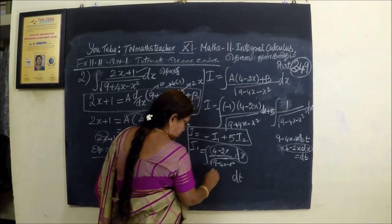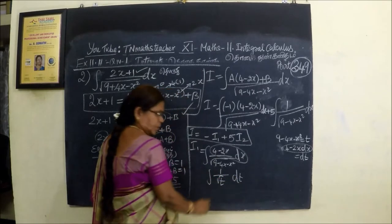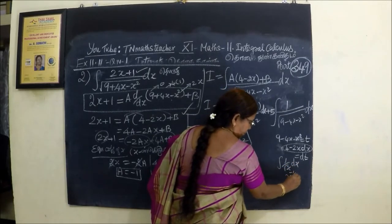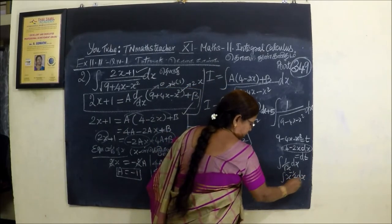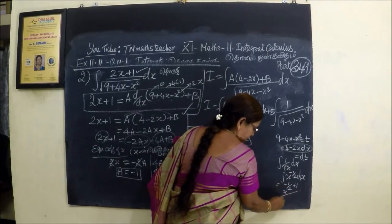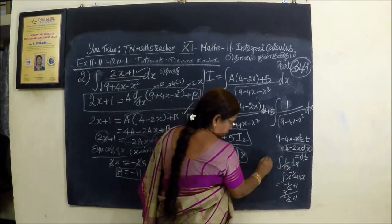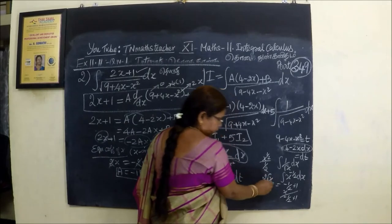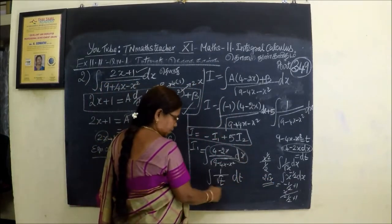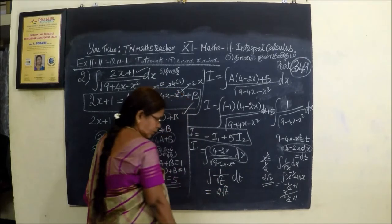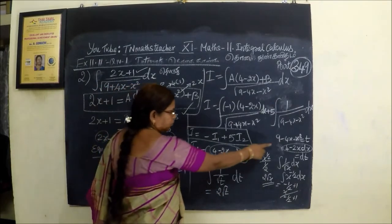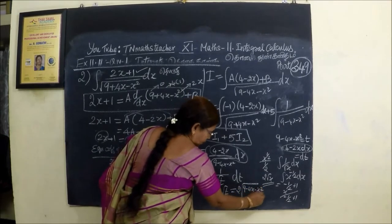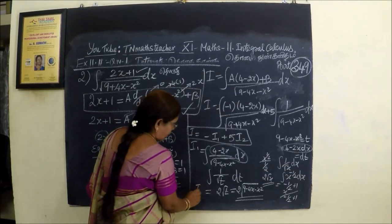What is the integral? It becomes 1 by t. What is the integration of 1 by root x dx? The power is minus half. The integration of x to the minus half is x to the minus half plus 1, divided by minus half plus 1, which gives x to the half by half, that is 2 root x. In the same way, this step gives 2 root t. Substituting back, t is 9 minus 4x minus x squared, so I1 equals 2 root of 9 minus 4x minus x squared.